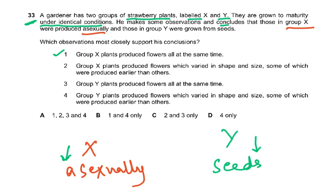Group X produced flowers which varied in shape and size? Well if they're clones then they couldn't vary in shape and size, so this is wrong. Group Y produced flowers all at the same time? But they were seeds and seeds can be different - there's a lot of variation in the seeds. Group Y produced flowers which varied in shape and size, some of which were produced earlier than others. Yes, because seeds must have come from different flowers. One and four is correct, so the answer is B.